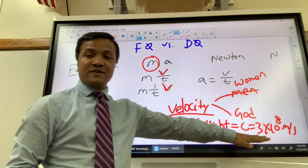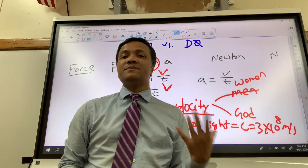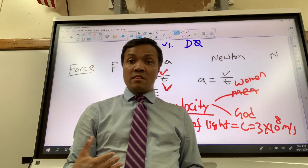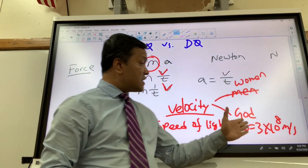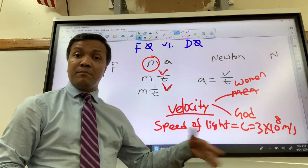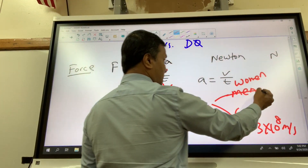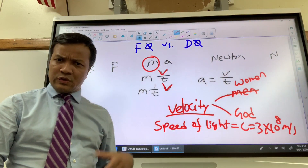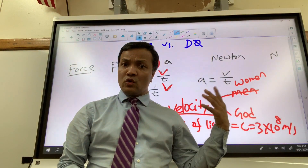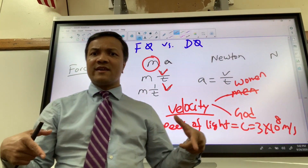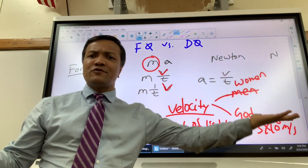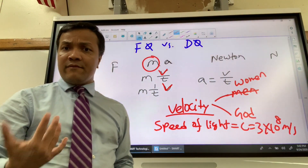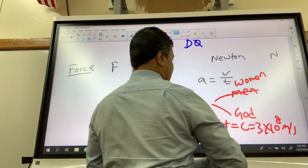Speed of light in a vacuum is 3 times 10 to the 8 — nothing can move faster than that. The woman-made velocity you can control. For example, inside a car you can drive 25 miles per hour or go above the speed limit.